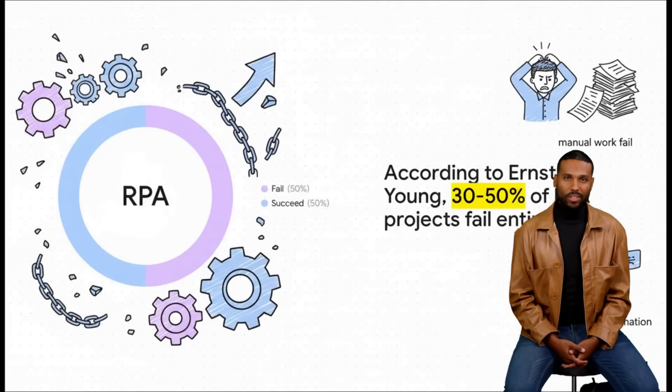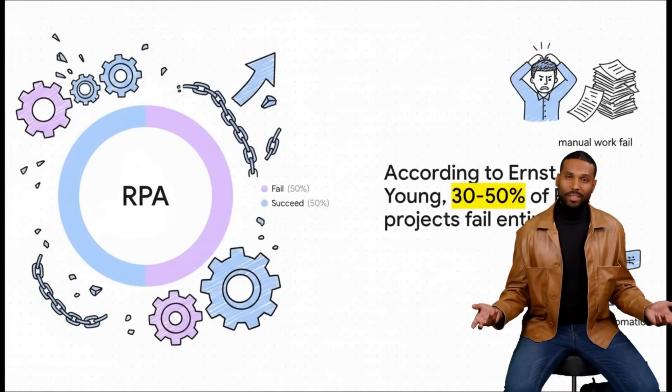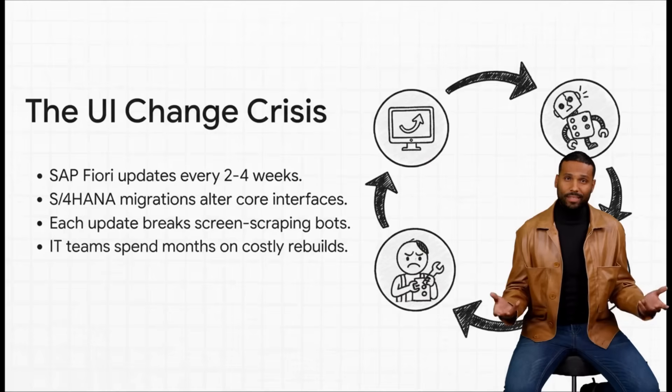And here's the proof. A shocking 30 to 50% of RPA projects, they just fail completely. The biggest culprit is what we call RPA brittleness. Basically, these automations are just too fragile.